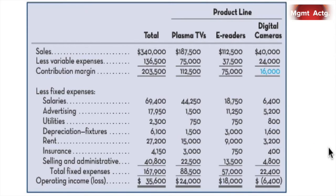Let's set up our scenario. We're going to follow the examples in the book — they're fairly good. We have a company that has three product lines: Plasma TVs, e-readers, and digital cameras. Based on the way they've written out their contribution format income statement, we can see the digital cameras appear to be a drain on the overall company by $6,400.